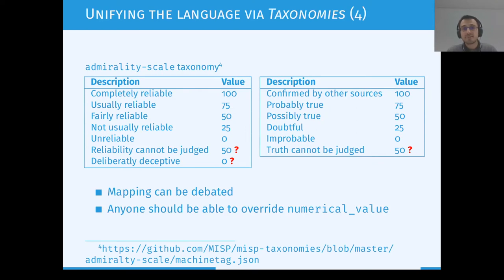Something that can be debated is how the mapping is done. For example, for reliability, we've mapped deliberately deceptive to zero and reliability cannot be judged to 50. This is something you can debate and may not agree with. But in the end, everyone should be able to override this value — in the MISP implementation, you have the possibility to set your own value if you do not agree with the default one.